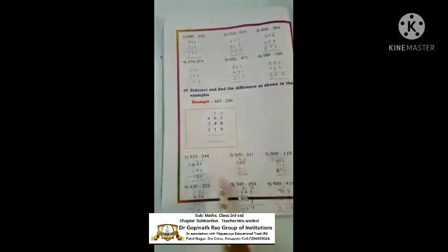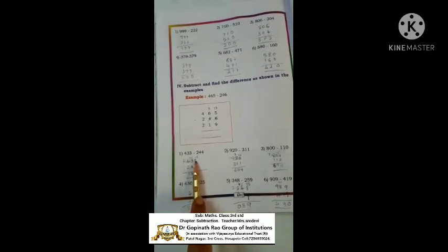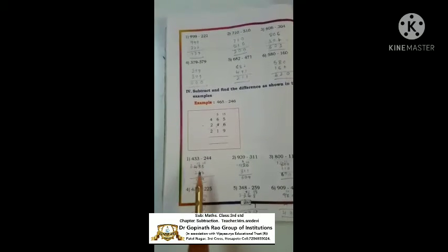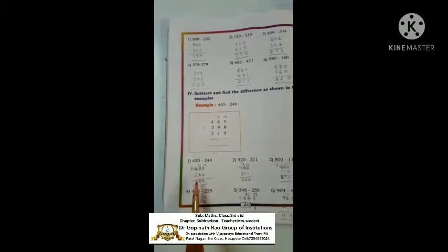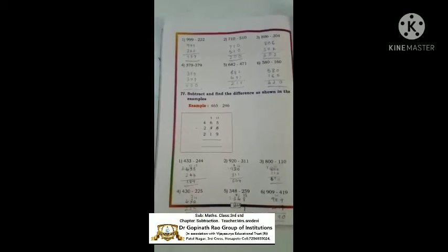Here these sums are with carrying. 433 minus 244: we can't subtract 4 from 3, so we take a borrow — it becomes 13. 13 minus 4 is 9. This becomes 2, then we take another borrow — it becomes 12. 12 minus 4 is 8. And 4 becomes 3, so 3 minus 2 is 1. The answer is 189. Next, 909 minus 419: 9 minus 9 is 0.